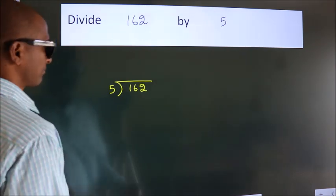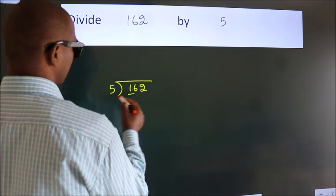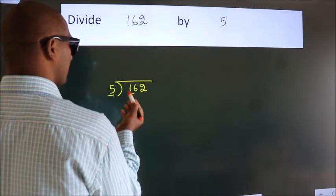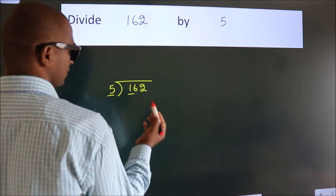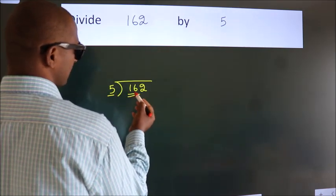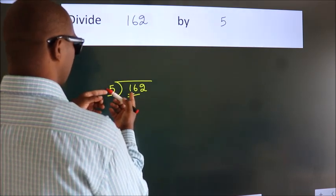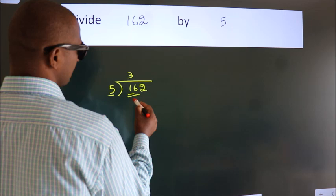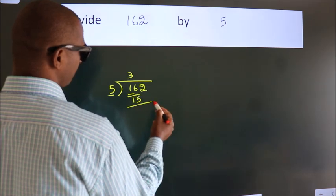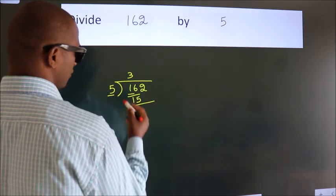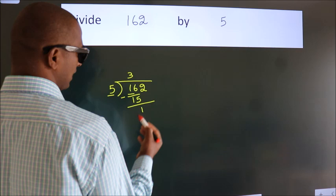Next. Here we have 1, here 5. 1 is smaller than 5, so we should take 2 numbers, 16. A number close to 16 in 5 table is 5 threes, 15. Now, we should subtract. We get 1.